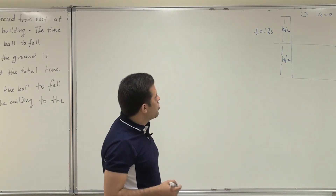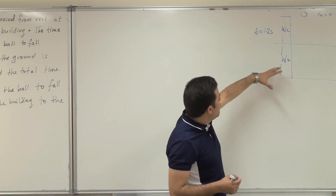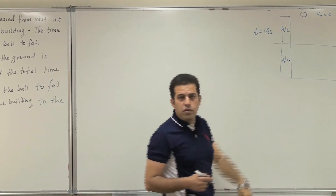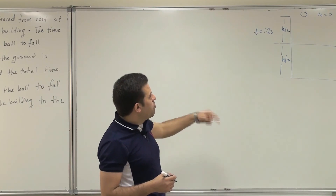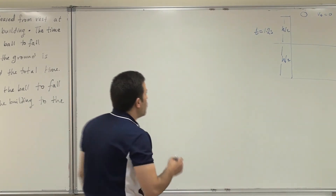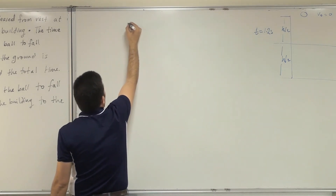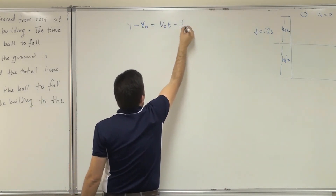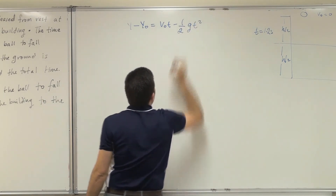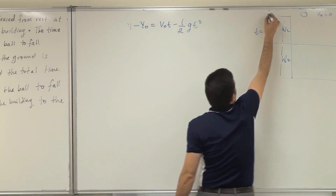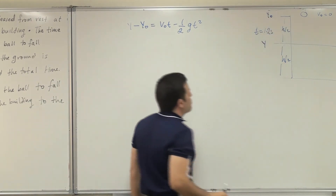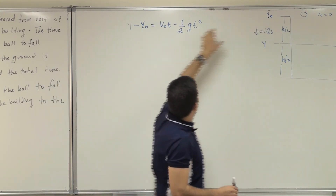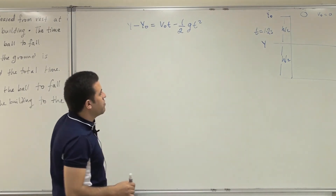We don't have many details, so the strategy is to first find the total height of the building using the halfway information, and then use the total height to find the total time. To find the total height, I start with the equation of motion: y minus y zero equals v naught times t minus half g times t squared.